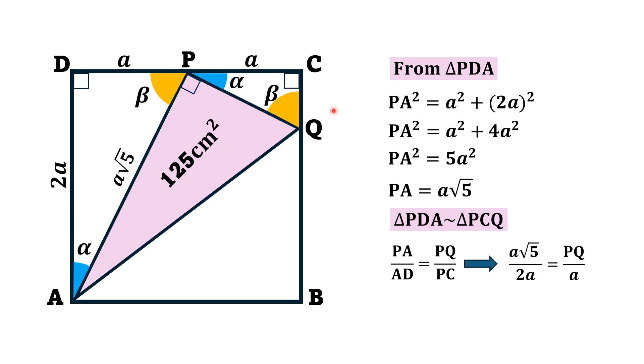Substituting the values, PA is a square root of 5, AD is 2a, PQ will remain same PQ, and PC is a. From here, if we simplify, we will find PQ as a square root of 5 by 2.